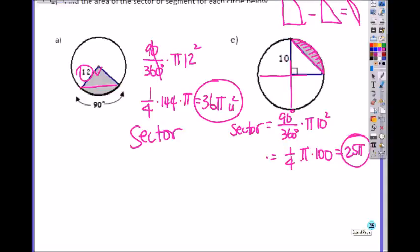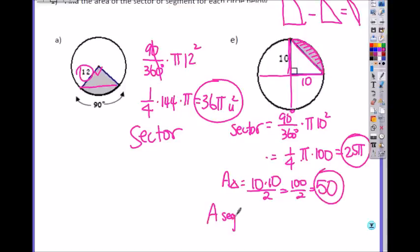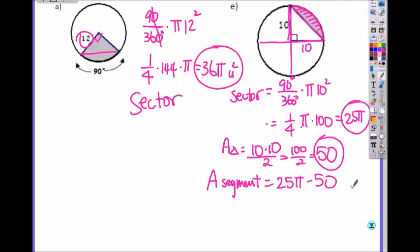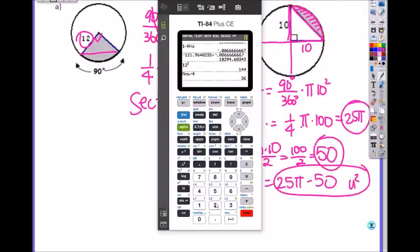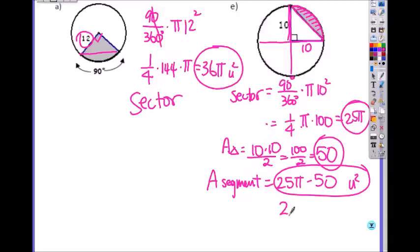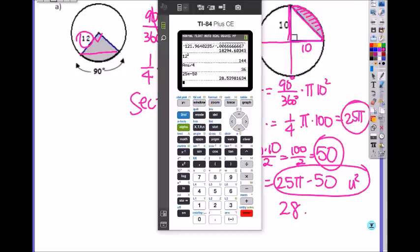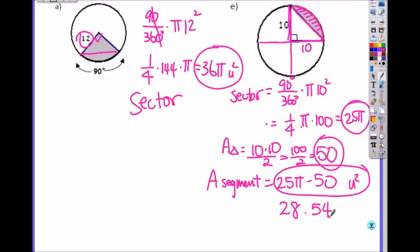This one is a right triangle, so it's very easy to find. Area of a triangle is base times height divided by 2, which is 100 divided by 2, which is 50. So how do you find the area of a segment? It is the whole sector, 25 pi, minus 50. If they ask you to write your answer in terms of pi or exact, this is what you will write. If you want the decimal answer, 25 pi minus 50 gives you 28.540 units.